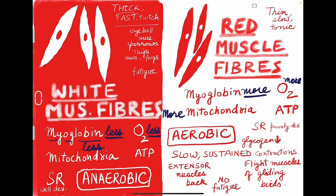Red muscle fibers carry a lot of oxygen, so there will be more oxygen available. Thus the amount of ATP will be more, because it is aerobic respiration — complete breakdown of glucose occurs. In white muscle fibers, partial breakdown of glucose occurs and ATP production is less.